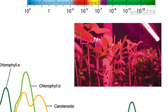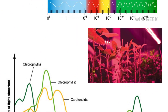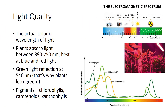Light quality helps determine the height of a plant. For example, red-yellow light promotes elongation, whereas green-blue light inhibits elongation and promotes shorter plants. When supplying supplemental light, you must know the plant's requirement for light quality and quantity because of the wide variety of light sources available.